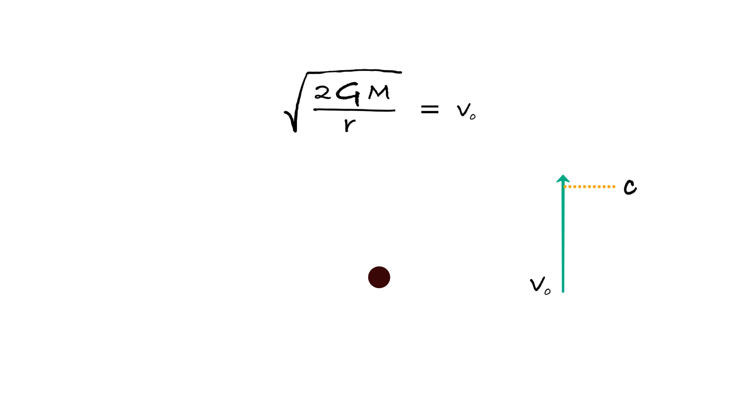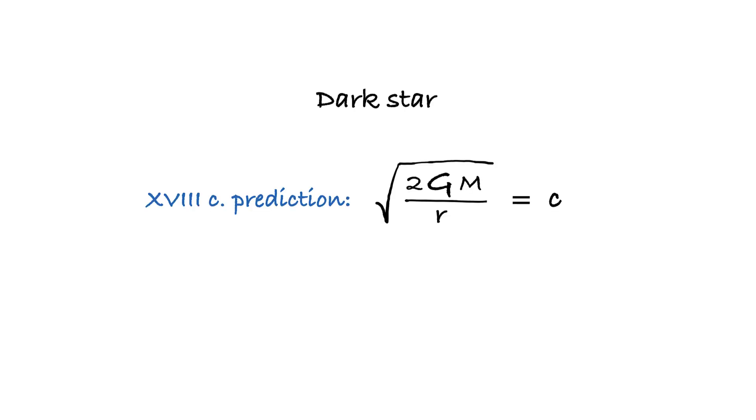Sounds familiar? It should. This is the earliest known prediction of black holes. Only Mitchell called them differently at the time. Dark stars. It is remarkable that they predicted this purely mathematically. First evidence pointing at black holes appeared only in the second half of the 20th century.